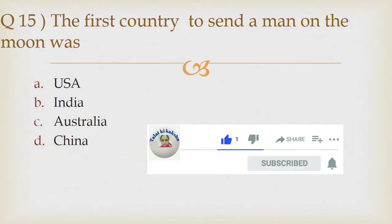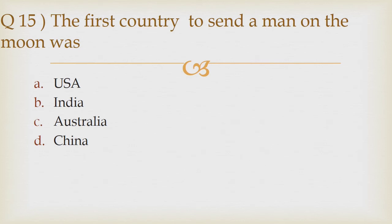Question 15: The first country to send man on the moon was option A USA, option B India, option C Australia, option D China. The correct answer is option A USA.